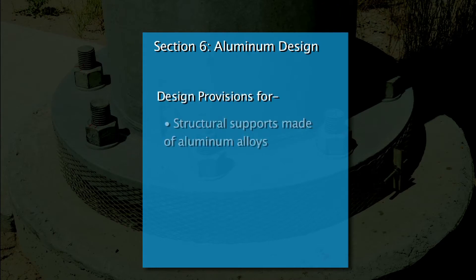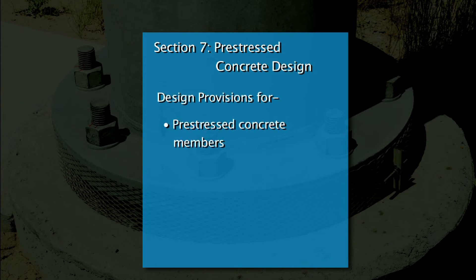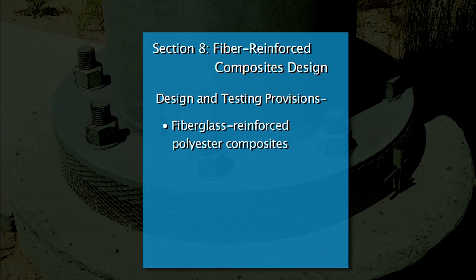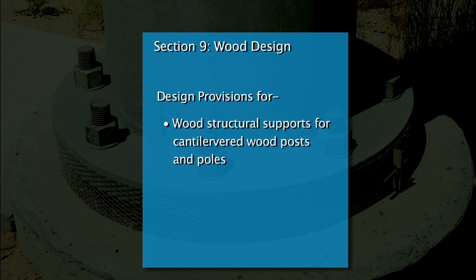Section 6, titled Aluminum Design, specifies design provisions for structural supports made of aluminum alloys. Section 7, titled Pre-stressed Concrete Design, specifies design provisions for pre-stressed concrete members. Section 8, titled Fiber Reinforced Composite Design, specifies design and testing provisions for fiberglass reinforced polyester composites. Section 9, titled Wood Design, specifies design provisions for wood structural supports that apply only to cantilever wood posts and poles.